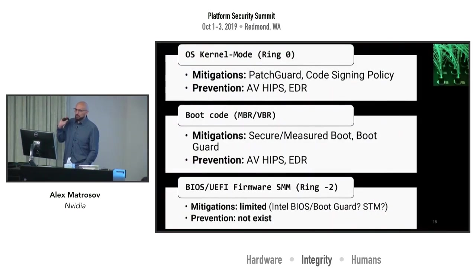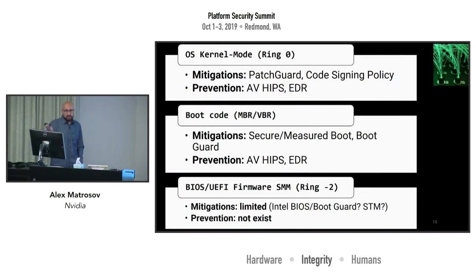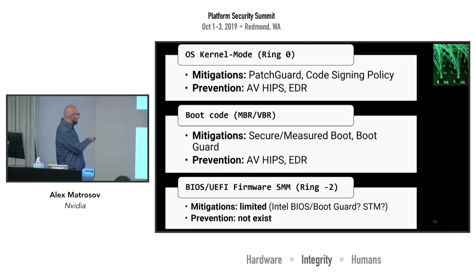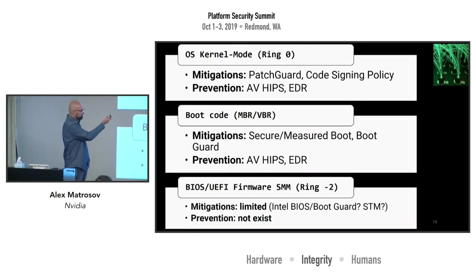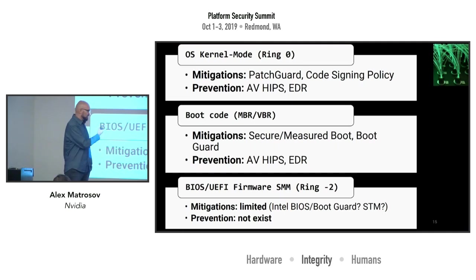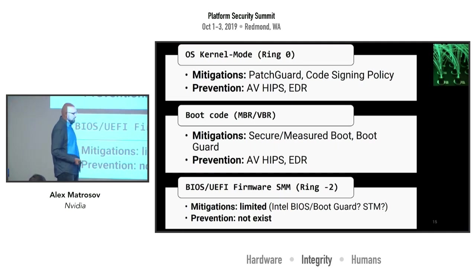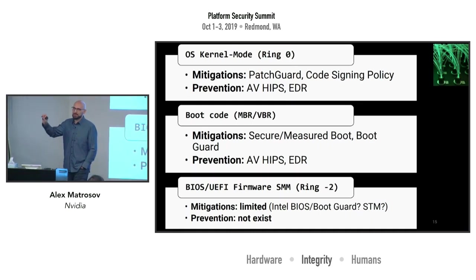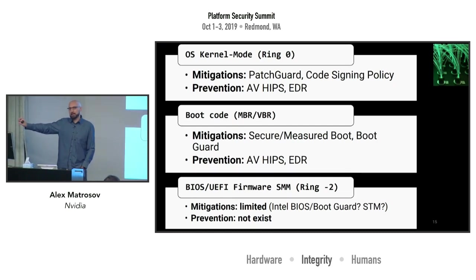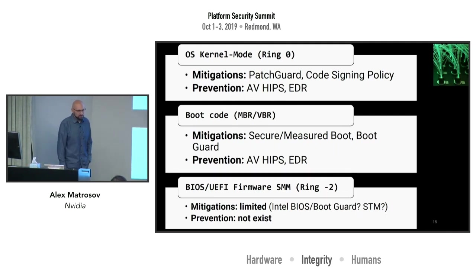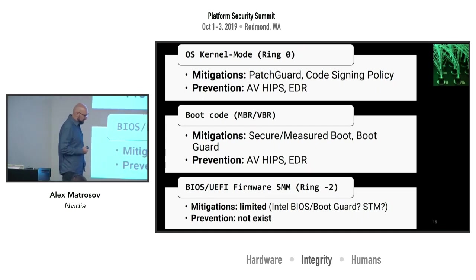On the kernel level we have PatchGuard, code signing, and many other mitigations, but we don't have anything equivalent for firmware. We have some mitigations that aren't against persistence happening at runtime — after the system has already booted. If somebody attacks SMM and persists with an implant in SMM memory without raising persistence inside the firmware or SPI flash, it will not be detected by any runtime checkers or verification mechanisms.